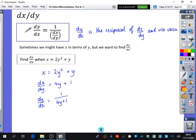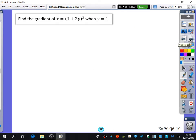So I'm going to do just a couple more of these examples. This time it says, find the gradient of x equals (1 plus 2y) cubed when y equals 1. So when we're talking about gradient, we are still talking about dy/dx. We're never talking about dx/dy, because we know that gradient is the change in y over the change in x. So it's secretly saying, find dy/dx when y is equal to 1. So I'll differentiate and find dx/dy.